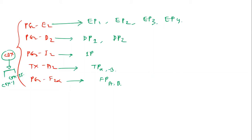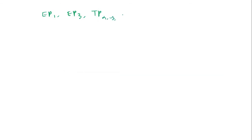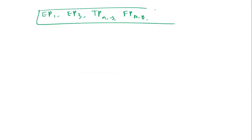Now we will see which type of G protein each prostaglandin receptor is coupled to, so we can determine what type of effect it will show. EP1, EP3, TPα, TPβ, FPa, and FPb — I have grouped these receptors together so that you can memorize them easily. These receptors are Gq coupled.